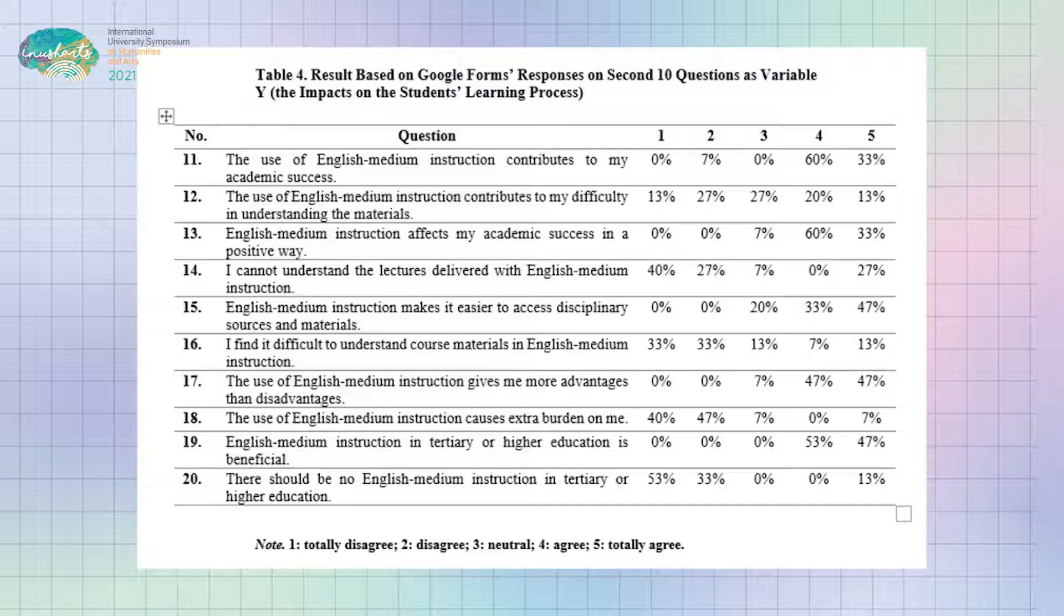Meanwhile, questions 12, 14, 16, and 18 were asked to see if EMI gave them disadvantages. If accumulated, the respondents tended to give negative responses on those questions. This result shows that the respondents were consistent on giving their views towards the impacts of EMI.